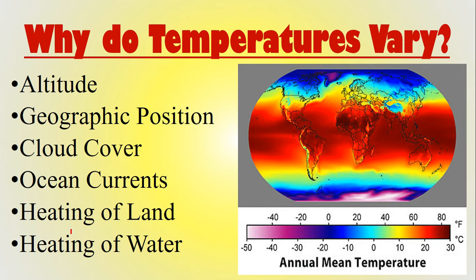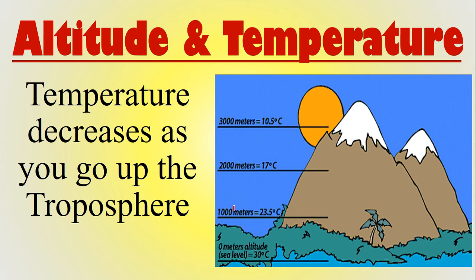Why do temperatures vary on Earth, specifically in the troposphere? First, altitude — as you go up in the troposphere, temperatures decrease. That's why going from the base of a mountain to the top gets colder, and why some mountains are permanently covered in snow. Geographic position: it is usually warmer near the equator and colder at the poles. Ocean currents also factor in — warm currents bring warm temperatures, cold currents bring cold temperatures. Land heats up faster than water.